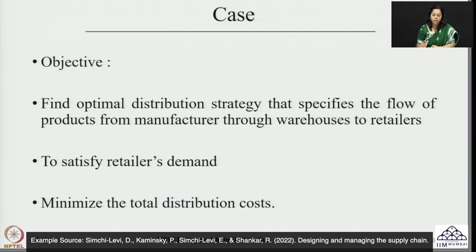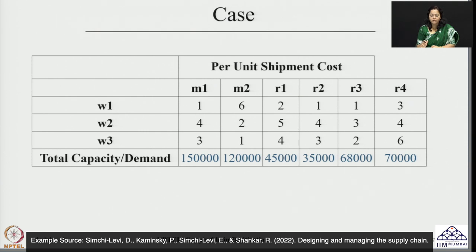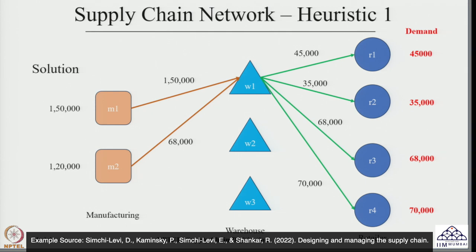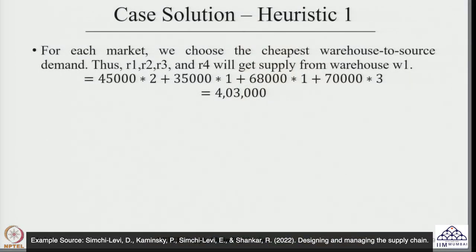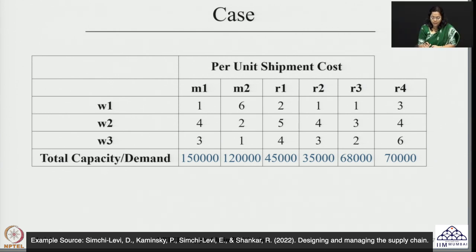We will try different approaches to solve this problem. We will start with a heuristic approach, calling it Heuristic 1. The strategy for Heuristic 1 is simple: fulfill every market's requirement by selecting the warehouse-to-retailer combination with minimum shipping cost. Looking at the warehouse-to-retailer portion of the cost table, we evaluate which warehouse best serves all four retailers.